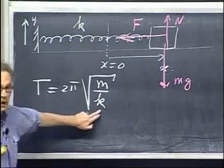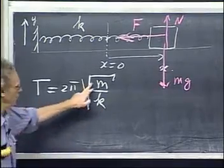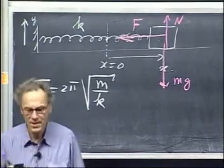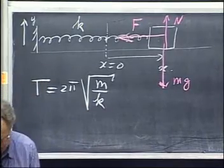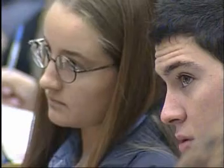In other words, if you measured the period and you knew the mass, then you can calculate k. Alternatively, if you knew k and you measure the period, you can calculate the mass, even in the absence of gravity. I don't use gravity here. So a spring always allows you to measure a mass, even in the absence of gravity.